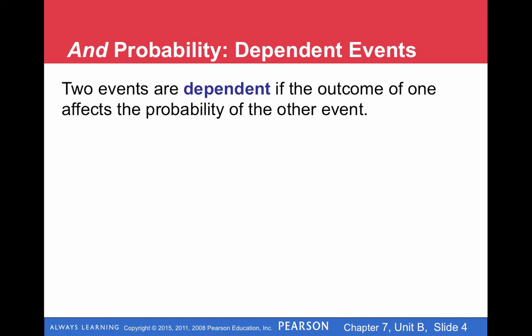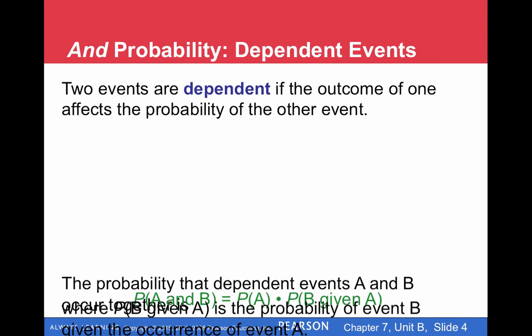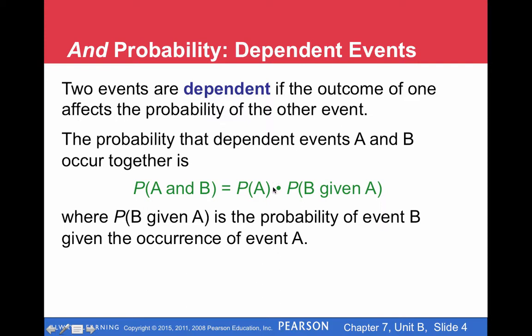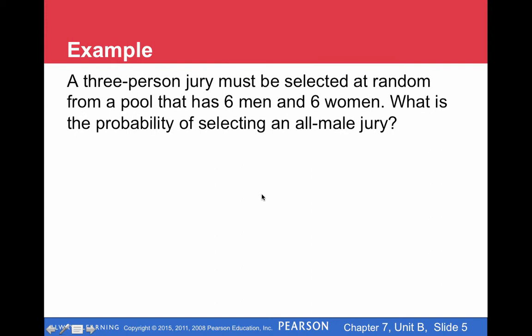Two events are dependent if the outcome of one affects the probability of the other event — the opposite case. So if we want to figure out the probability of those multiple events, we still multiply, but the probability for the second fraction is going to change based on the occurrence of the first event. Usually when we sample without replacement from a deck of cards or if we make committees of people, we don't replace people — we don't put the card back in the deck. That's when we sample without replacement.